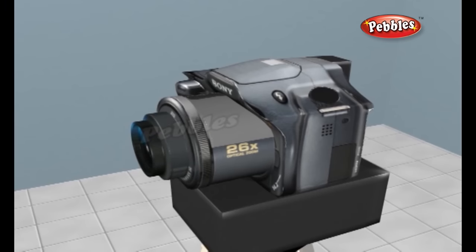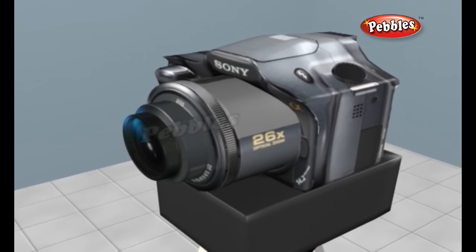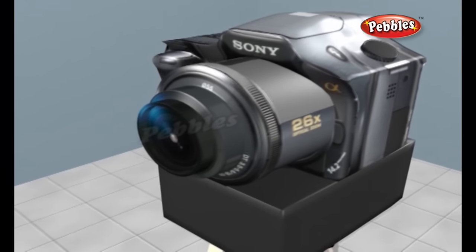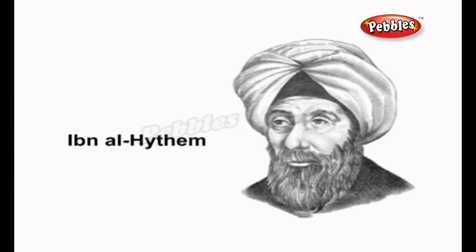A camera is a device that records images either as a still photograph or as moving images known as videos or movies. The term comes from the camera obscura, an early mechanism of projecting images. The camera obscura was first invented by the Iraqi scientist Ibn al-Haytham, as described in his book of optics.